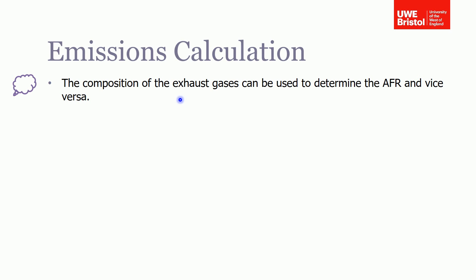To illustrate this, if you know the composition of the exhaust gases — or if you measure them with some equipment — then from that you can determine the AFR of your actual mixture in your combustion system. You can also do the vice versa: if you know the air-to-fuel ratio going in, then you can predict what the exhaust gas composition is going to be. Calculating the AFR from the exhaust gas composition is a little more tricky, so that's the example I'm going to work through.